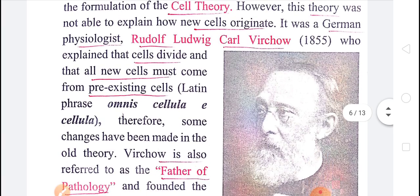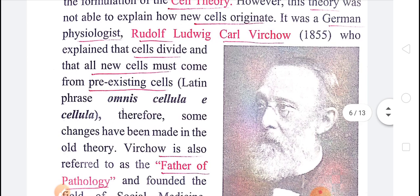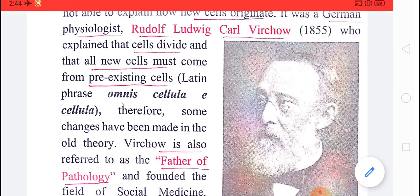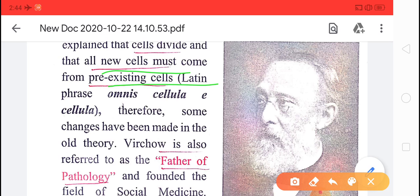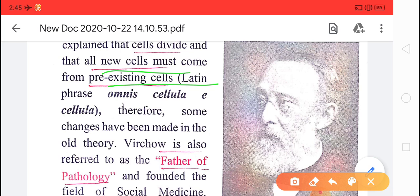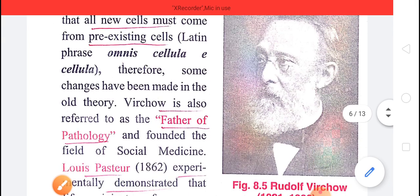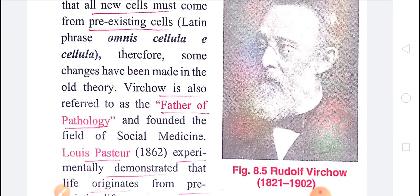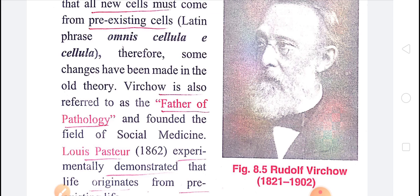Later, Rudolf Virchow made some improvements and added new points regarding cell theory. He said that all new cells must come from pre-existing cells. He gave a Latin phrase — omnis cellulae e cellula — meaning that cells are made from pre-existing cells. Virchow is referred to as the father of pathology.